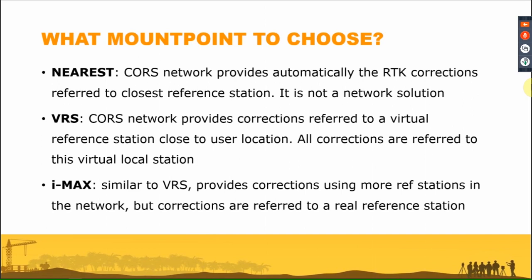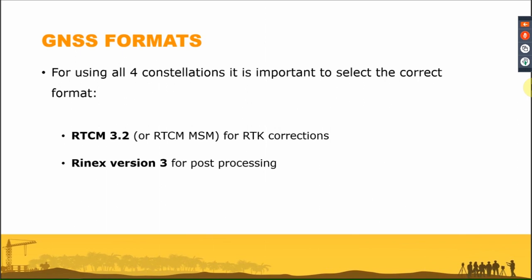The third solution is iMAX, similar to VRS — it uses all reference stations closest to your position, but the rover is connected to a real station while also using corrections from other reference stations. The correction services available depend on the CORS network you are using. To use Galileo and Beidou satellites, your network must be capable of tracking those satellites, and you need to choose the correct format.